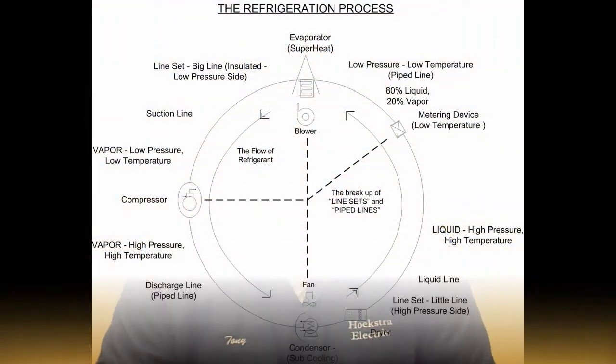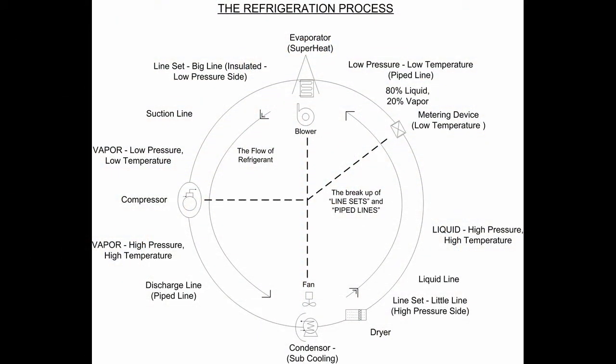I'll briefly explain the refrigerant cycle. Liquid refrigerant entering the evaporator from the metering device is suddenly under low pressure. This low pressure allows the liquid refrigerant to evaporate in the coil, thus so named the evaporator.